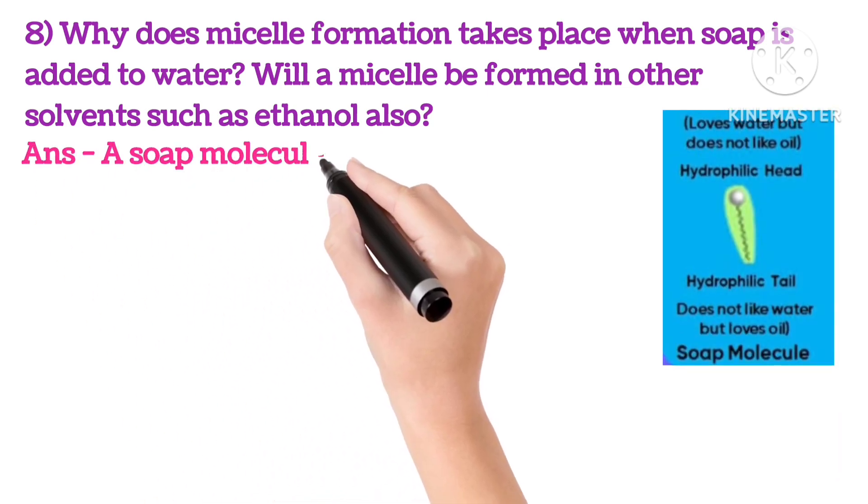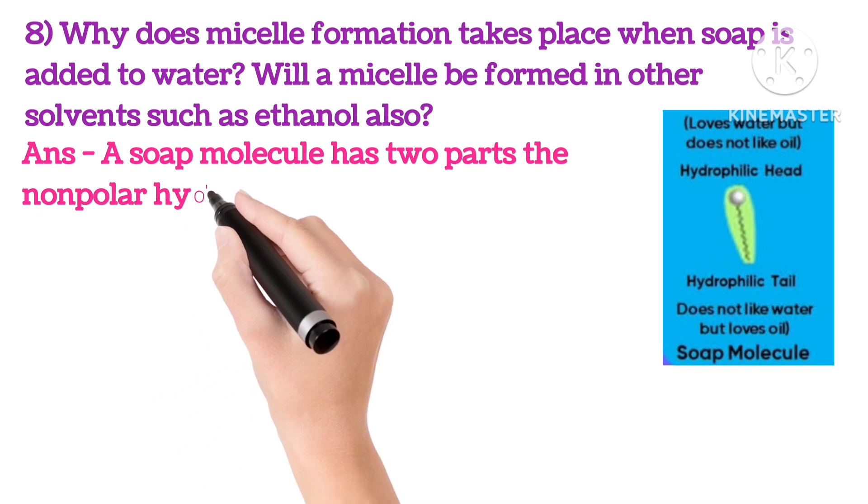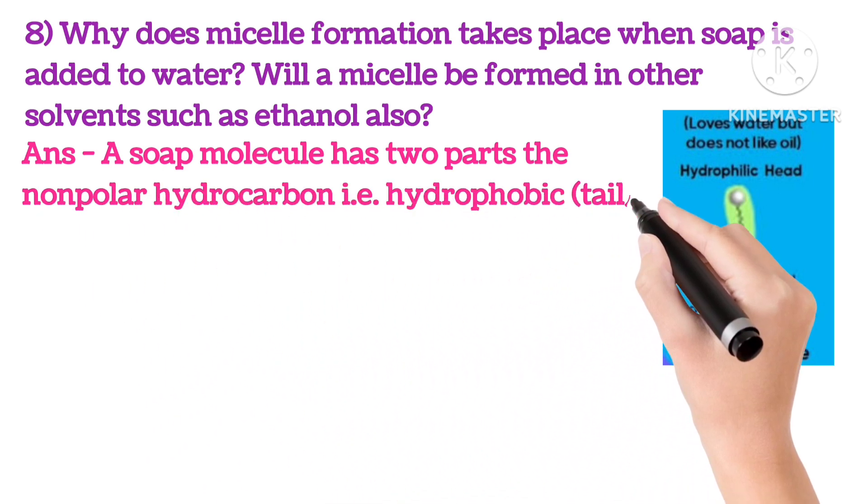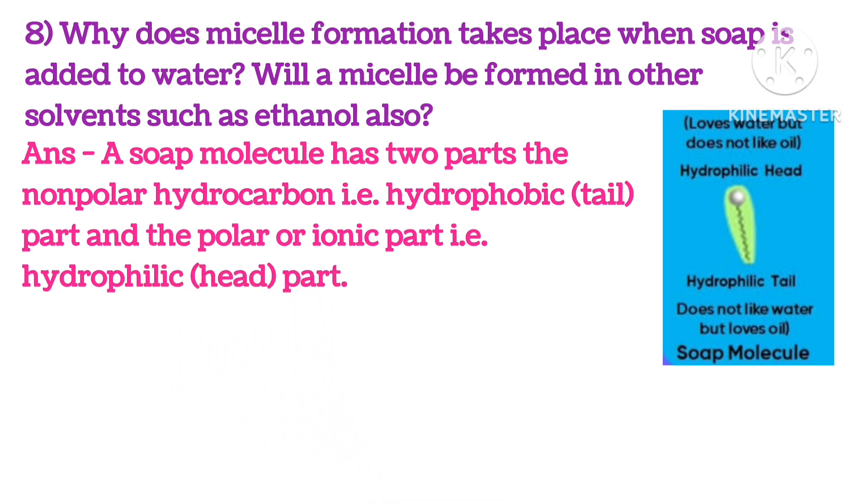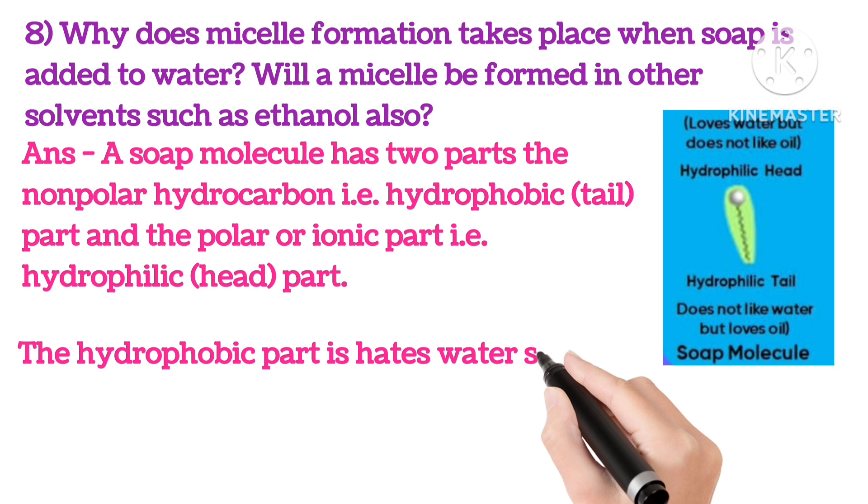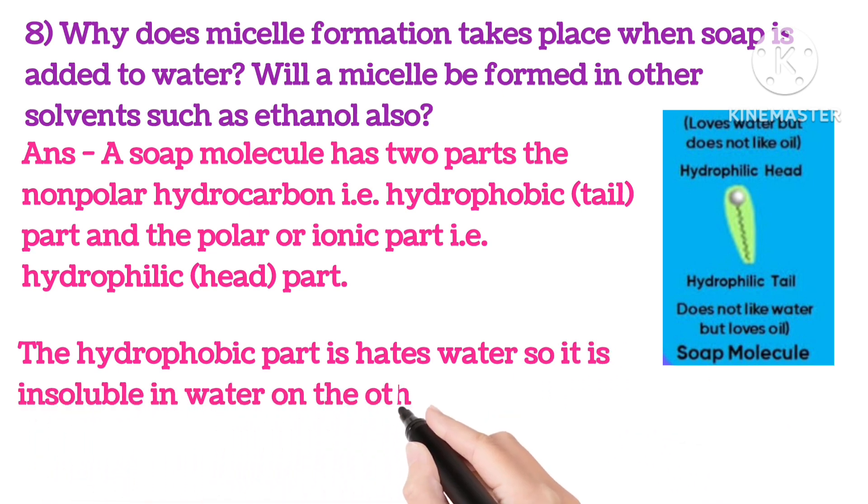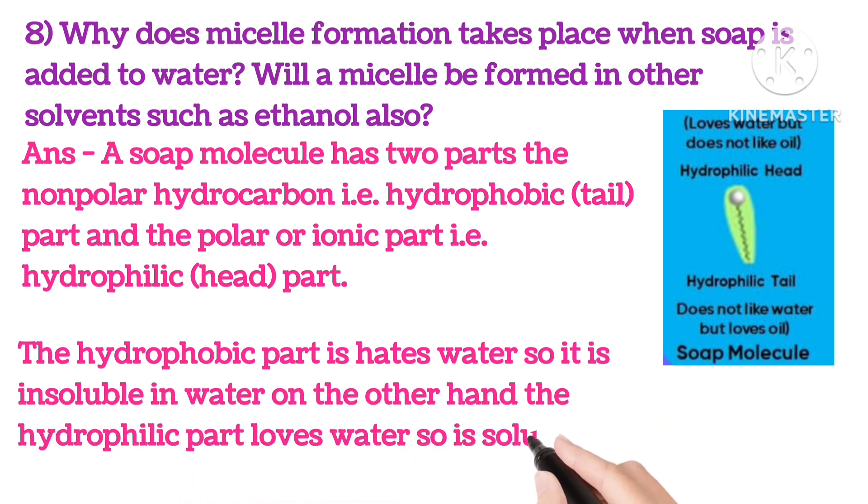As you can see in the picture, a soap molecule has two parts: the non-polar hydrocarbon, i.e. hydrophobic tail part, and the polar ionic part, i.e. hydrophilic head part. The hydrophobic part hates water, so it is insoluble in water. On the other hand, hydrophilic part loves water, so it is soluble in water.